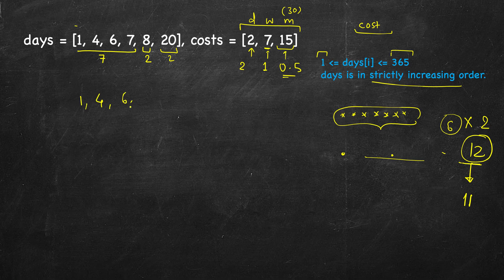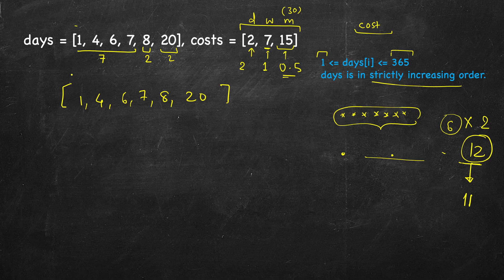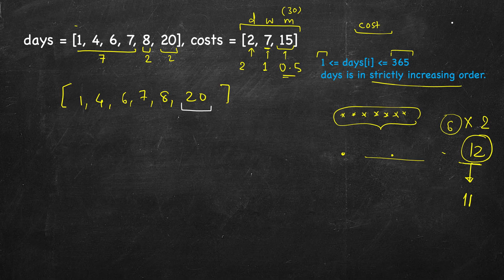So how do we formally solve this? We will try to build the solution bottom-up — this hints at dynamic programming. I prefer the bottom-up approach and will do the same here. If you are given just one day, the safe bet is to take the minimum of the three tickets. In this case, 2 for the daily pass.